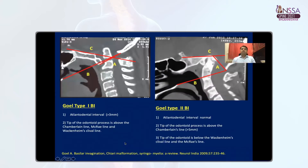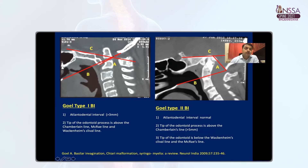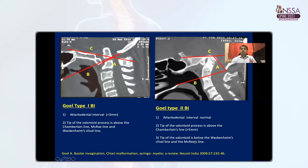Goel defined and classified BI into two types. This classification remains the most popular and accepted worldwide. Type 1 is when BI is associated with AAD, and Type 2 when BI is not associated with AAD but is associated with flat and hypoplastic clivus and syringomyelia. Type 1 is defined when the tip of the odontoid process remains above all three lines — McRae's, Wackenheim's, and Chamberlain's. Type 2 is defined when the tip of the odontoid process crosses above the Chamberlain line but remains below Wackenheim's and McRae's lines.